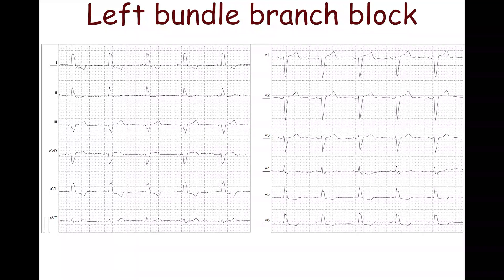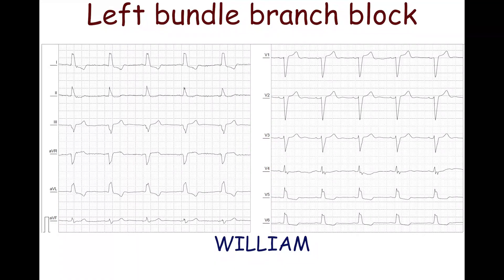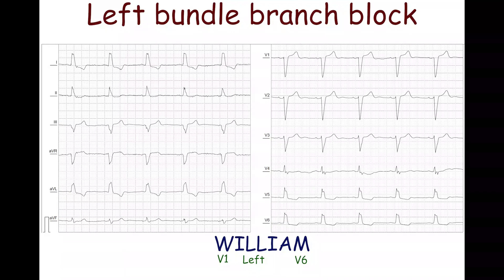The left bundle branch block produces an M-shaped complex in lead V6, and often in leads I, AVL, and V5. WiLLiaM is a mnemonic word for the left bundle branch block. The letters in this acronym correspond to specific ECG characteristics: W signifies a W-shaped QRS complex in lead V1, L denotes left bundle branch block, and M indicates an M-shaped complex in lead V6.